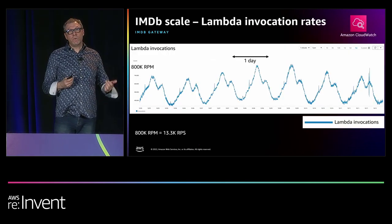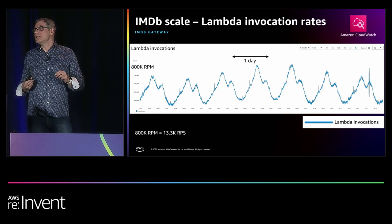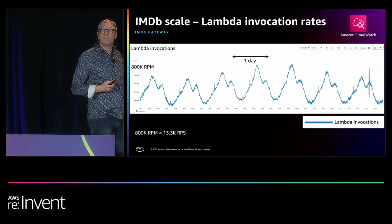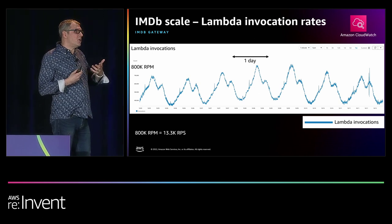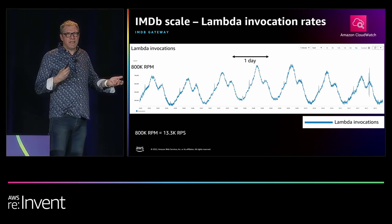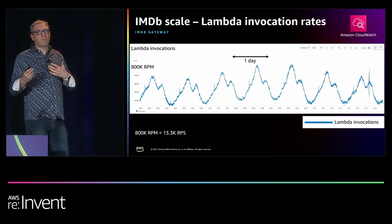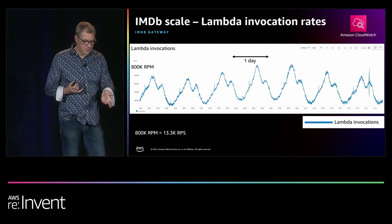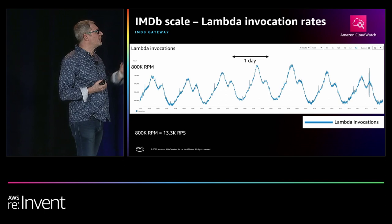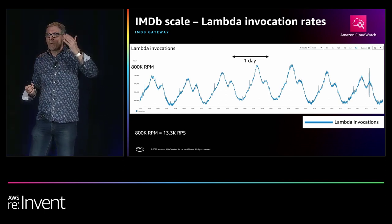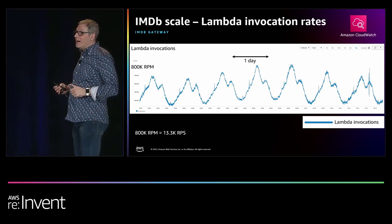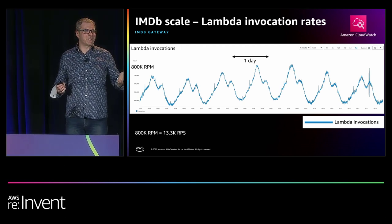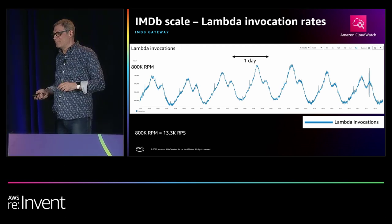This is the actual metrics for Lambda invocations — the number of Lambdas being invoked per minute by IMDB. This can be translated to requests per minute since each Lambda invocation represents a single request. Note it peaks at 800,000 requests per minute. It also goes up and down quite a bit — it's quite cyclical. This is one of the things I posted on Twitter asking which service this is. Well, it's IMDB — now you know.